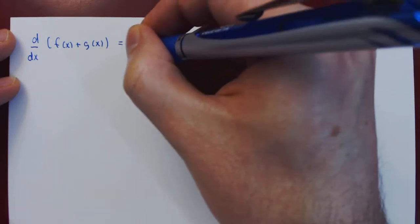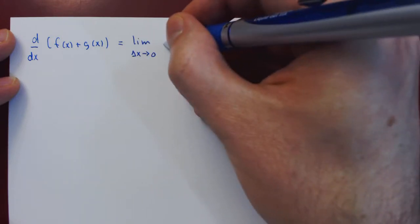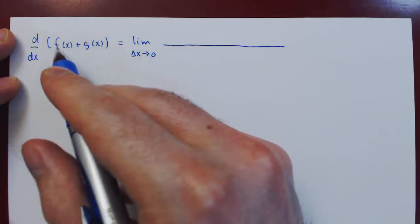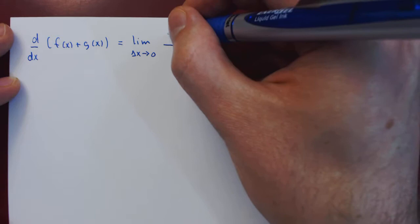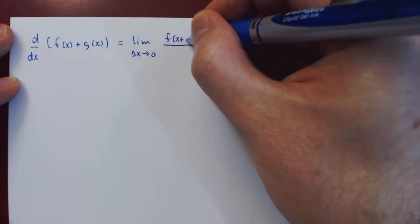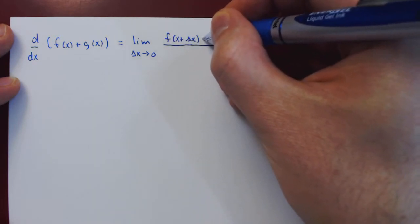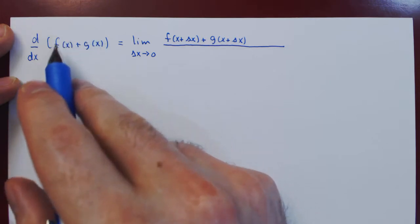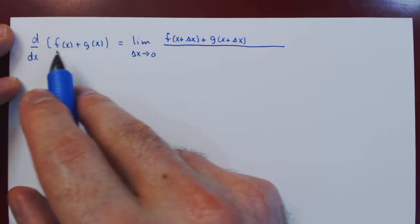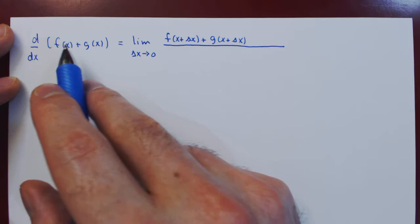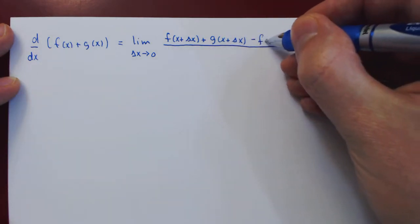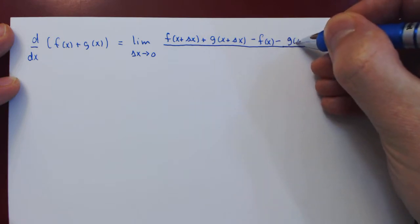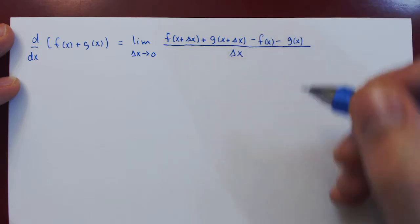Which is the limit as delta x approaches 0 of the change in the function, therefore the function at x plus delta x, which is f of x plus delta x, plus g of x plus delta x, then minus the function at x. But here, since we subtract over the entire function, both f and g are negated. So, minus f of x minus g of x, and of course, all over delta x.